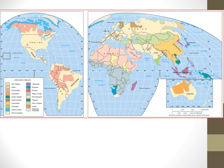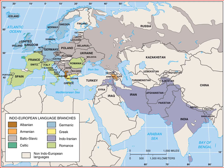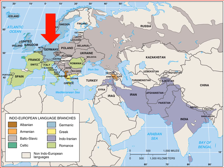There's plenty of diversity within the Indo-European language family. There are eight major branches of Indo-European. The Indo-Iranian branch includes languages like Farsi, spoken in Iran, and Hindi, spoken in India. The Balto-Slavic branch includes Russian, Polish, and Croatian. The Germanic and Romance branches have diffused the farthest. The Germanic branch includes German and Dutch, but also English, which is spoken around the world. The Romance branch also has diffused far, as Spanish, French, and Portuguese are spoken across several continents.